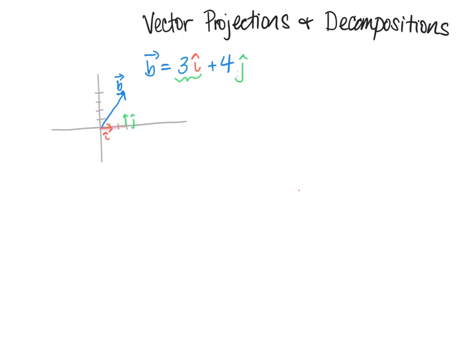This is the vector 3i right here and this is the vector 4j, and notice I can add the 3i plus the 4j — the light pink and the light green — and that gets me back to the blue vector.